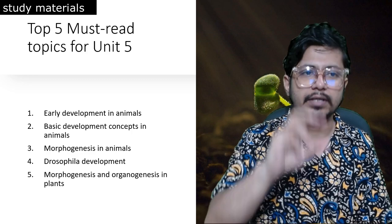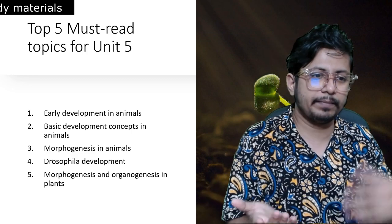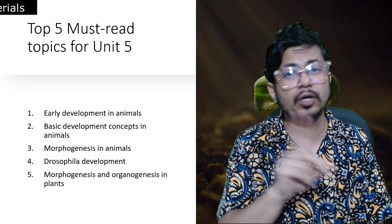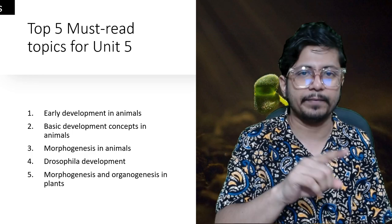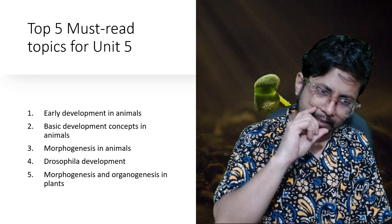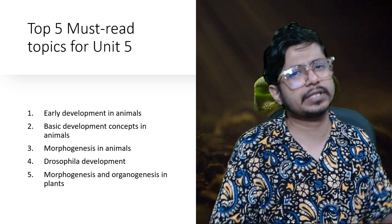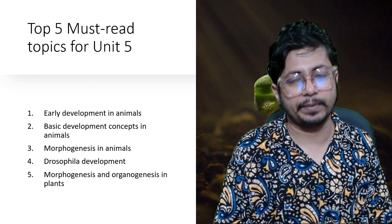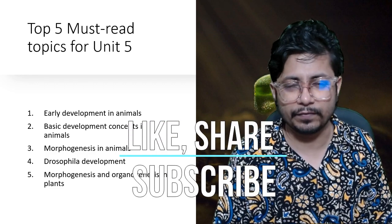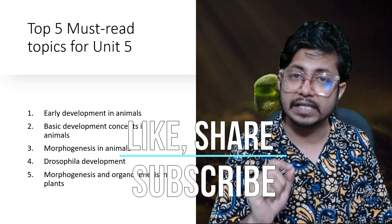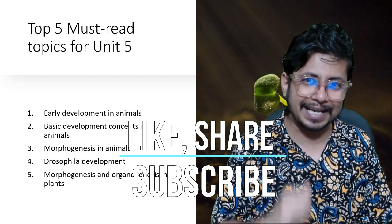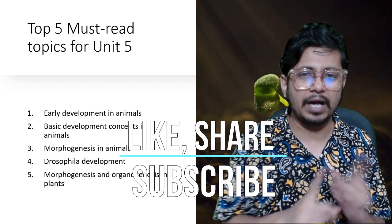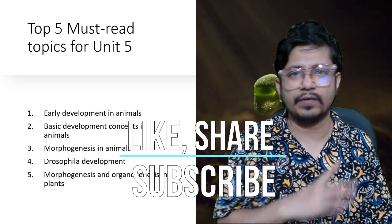Among the five important topics, the only one concerning plants is morphogenesis - particularly the flower development part. If you are from plant biology you can study that part, but don't expect many questions from plant development even though it's in the syllabus. These are the topics to fast-track your preparation for CSIR NET Life Science Unit 5 Developmental Biology. If you like this video, hit the like button, share it with your friends, subscribe, and watch all videos in this series.